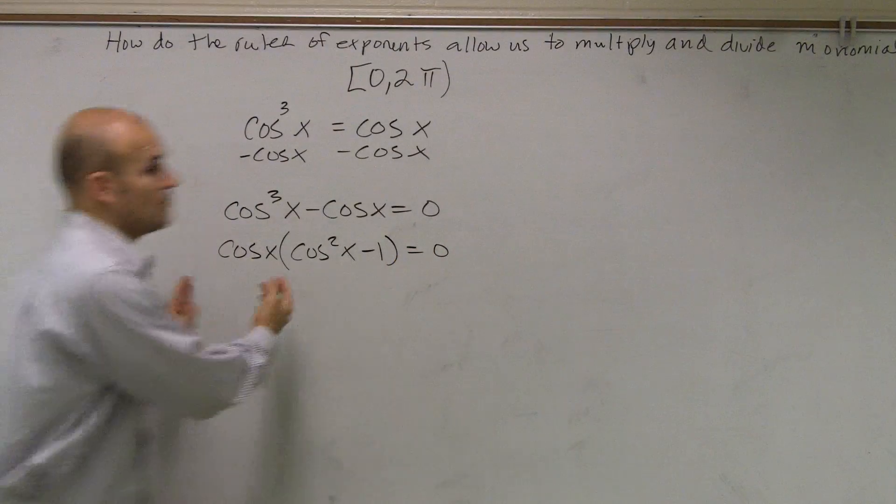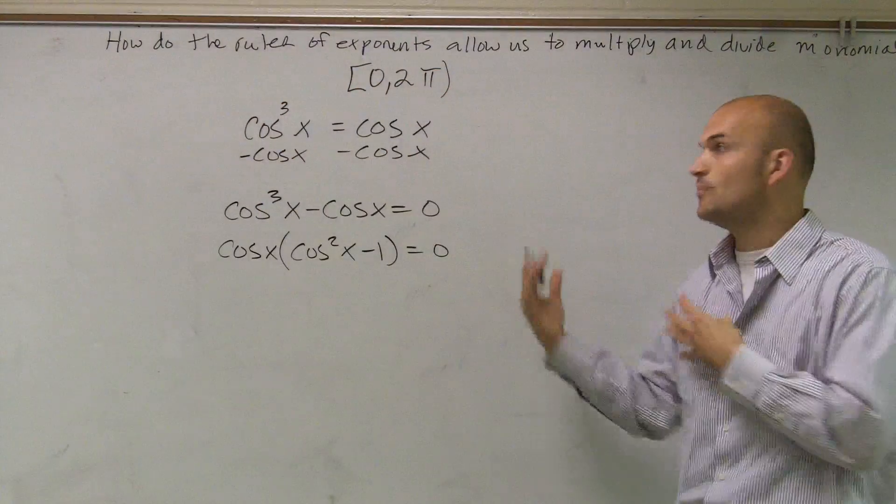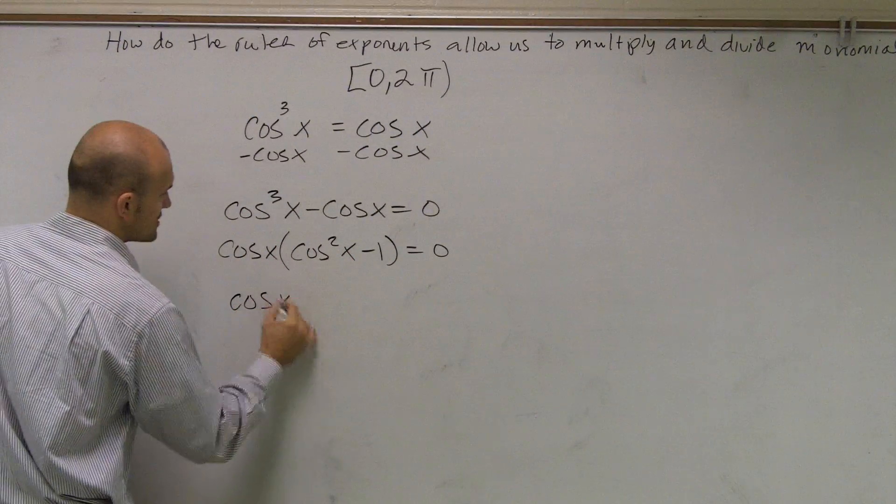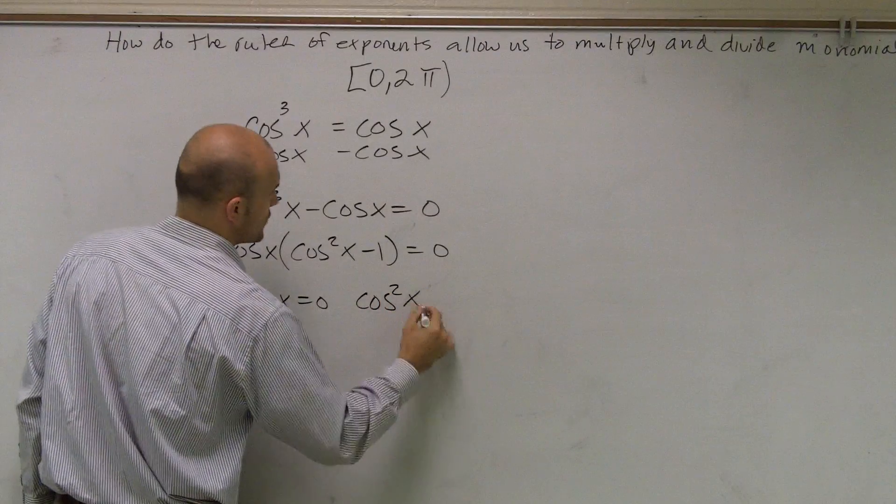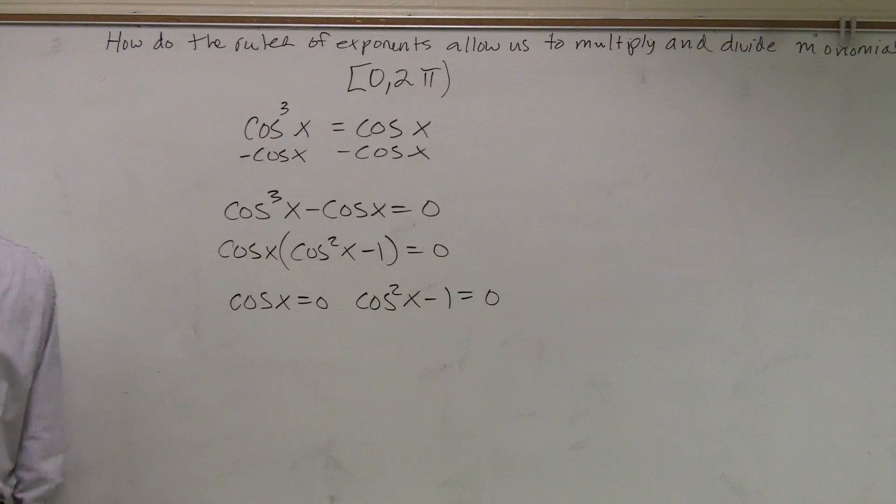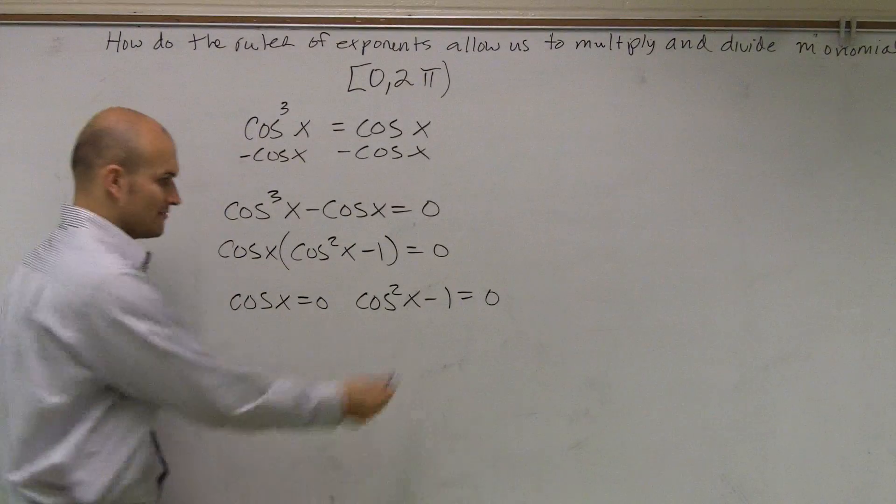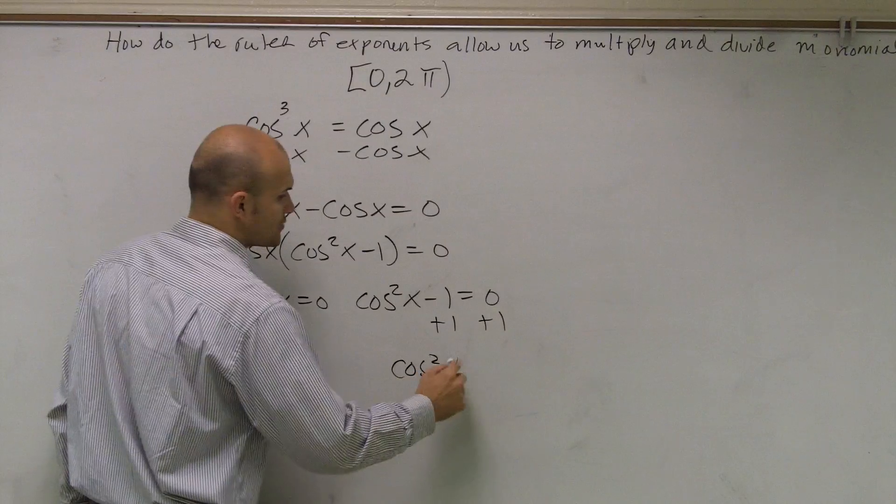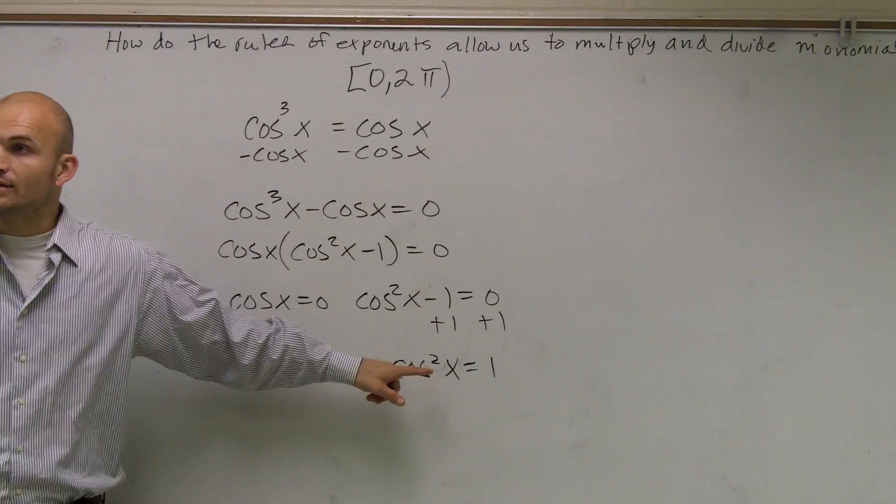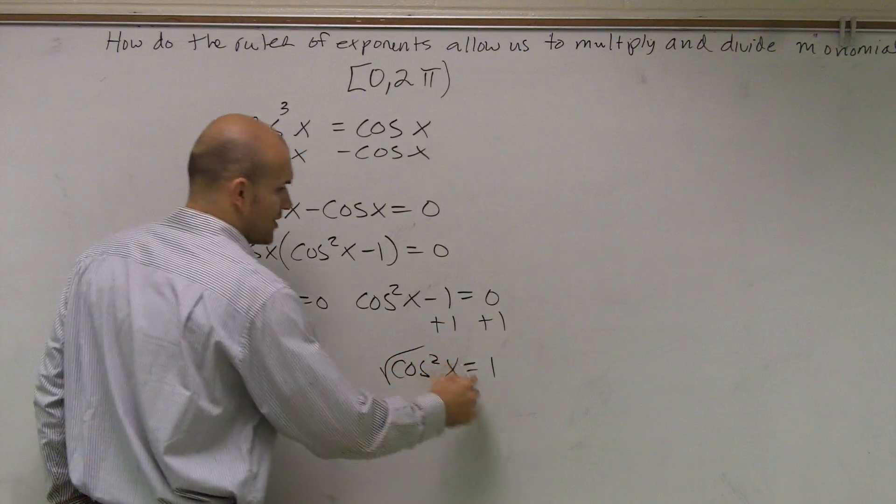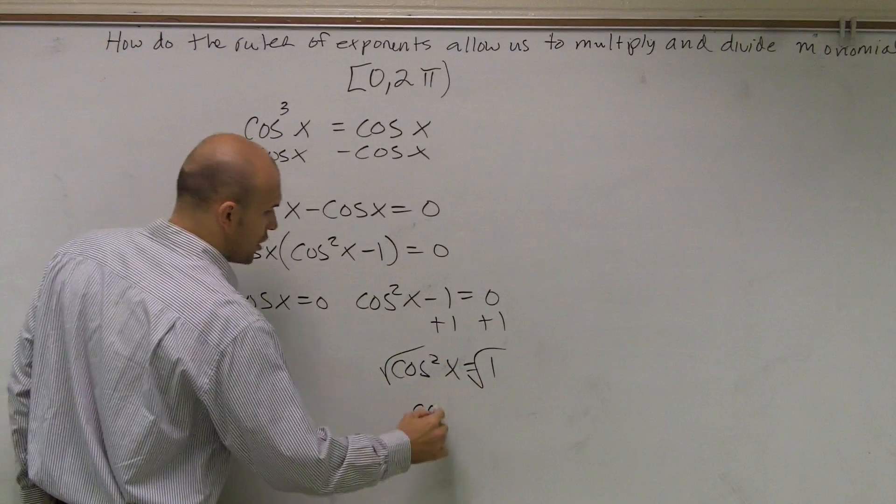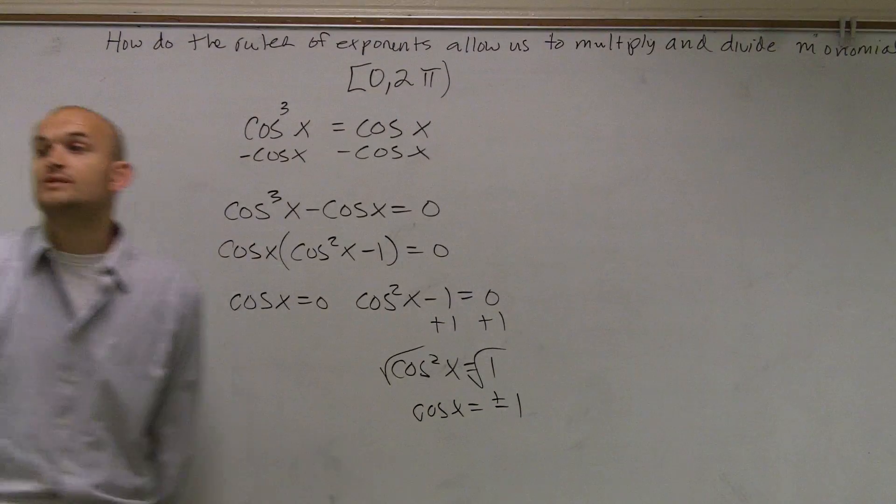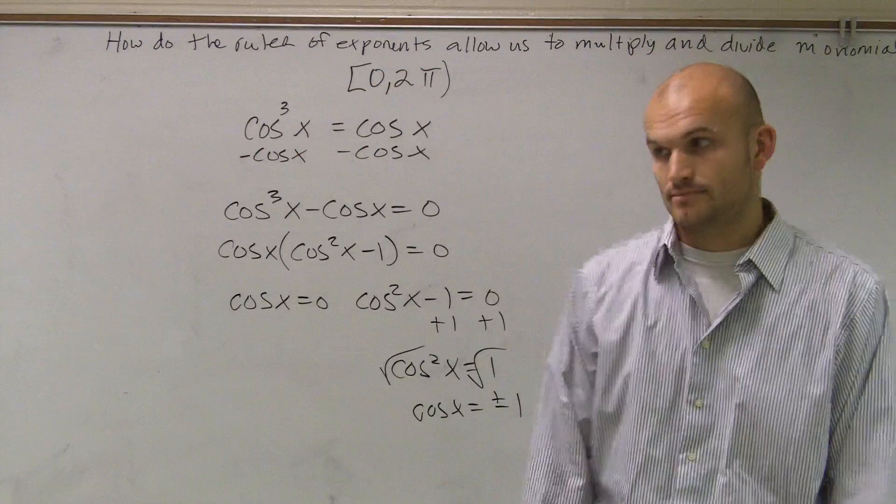Now, we know that once you have two values equal to 0, you can set them both equal to 0. So you have cosx equals 0, and cos²x minus 1 equals 0. And then you add the 1. You add for this one. So this one's already set. Here, you're going to add the 1. And you get cos²x equals positive 1. Now, we can get rid of the square by square rooting. So we get cosx equals plus or minus 1. Don't forget the plus or minus 1.